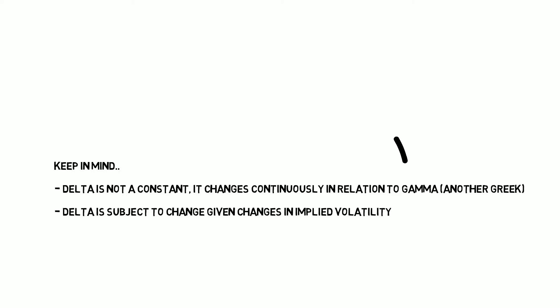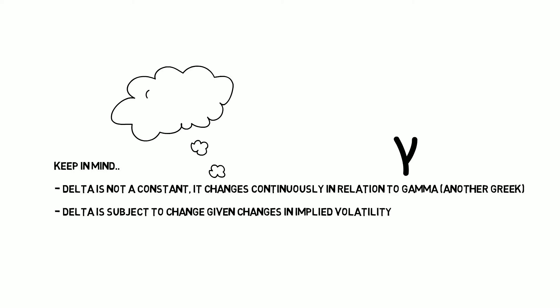Although this is rather simple, it's important to note that Delta is not constant. It always changes relative to Gamma, which is another Greek based on the rate of change. It's also subject to change with respect to implied volatility. This means that Delta is always in motion, moving around based on a number of other parameters.